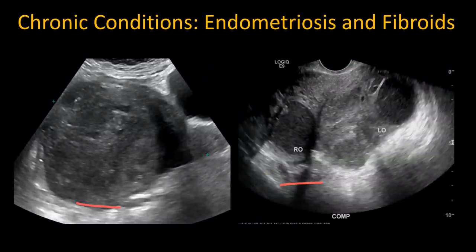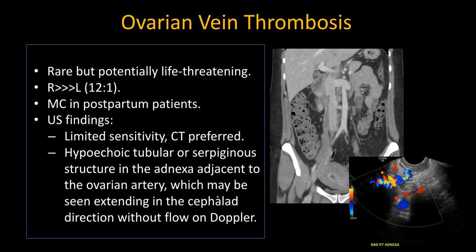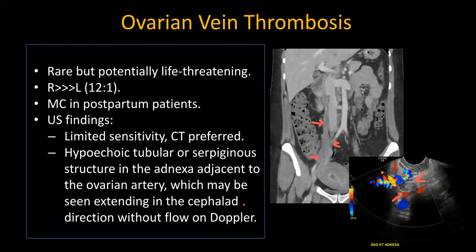Chronic conditions such as fibroids and endometriomas can rarely present with acute symptoms and should not be forgotten given how common they are. Rare pathologies include ovarian vein thrombosis, seen most commonly in the postpartum period — ultrasound is difficult because adnexal vessels are not well visualized. In one case diagnosed on CT, the right ovarian vein was dilated with a filling defect. Retrospectively on pelvic ultrasound, a cord-like structure in the right adnexa likely represented the thrombosed right ovarian vein.